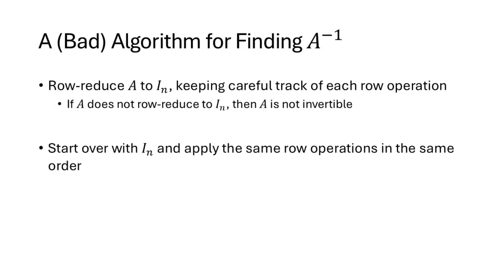This gives us an algorithm for computing A inverse, though not the most efficient one. The process is: start with A, row reduce it to I_n — if we don't get I_n, the matrix is not invertible. If we do get I_n, keep careful track of each row operation, then start over with I_n and apply those same row operations in the same order. The result is A inverse, but this approach is tedious and not very efficient.